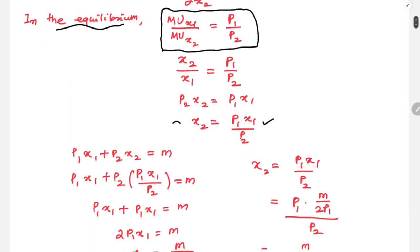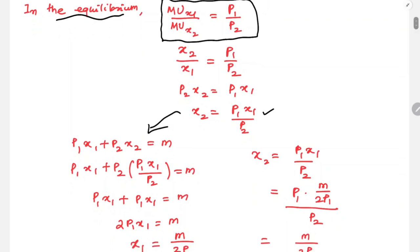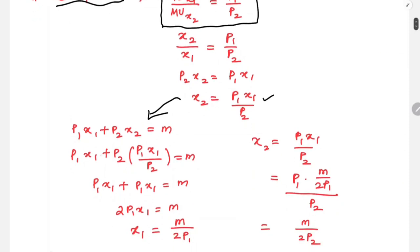Substituting x2 = p1·x1/p2 into the budget constraint p1·x1 + p2·x2 = M: p1·x1 + p1·x1 = M. So 2·p1·x1 = M, therefore x1 = M / (2p1).